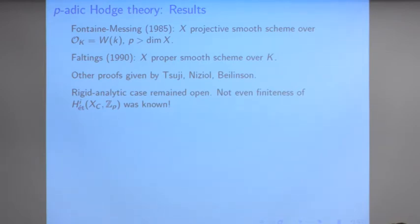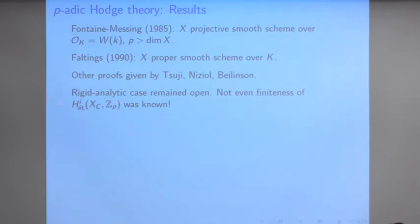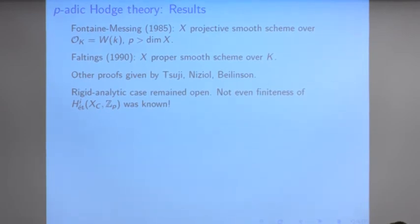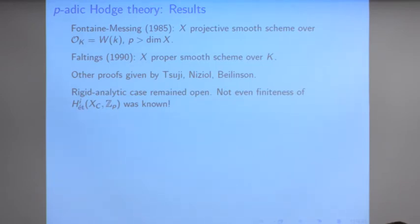However, the rigid analytic case already considered by Tate remained completely open. One reason one couldn't hope to say much was that one critical object — the p-adic étale cohomology of the generic fiber — was not even known to be a finitely generated C_p-module for a general rigid analytic variety. In the complex case this was obvious because you could cover your space by open polydisks and use that to compute singular cohomology, since the cohomology of a polydisk is so simple.